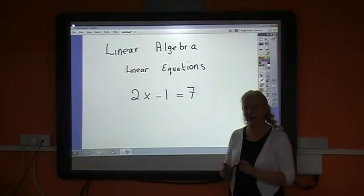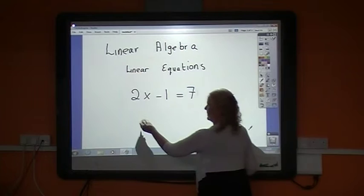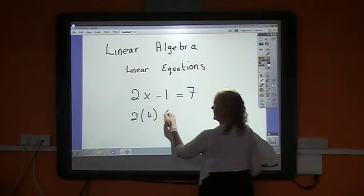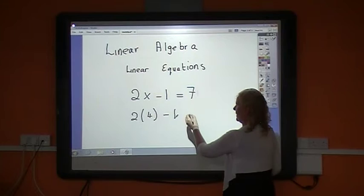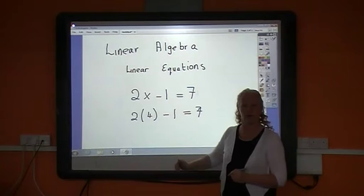But I'll just show you why 4 is the answer now. 2 times x, which is 4, minus 1. 2 times 4 is 8. Take away 1 is 7. So it does equal 7. So 4 works for that equation. So 4 is a solution.